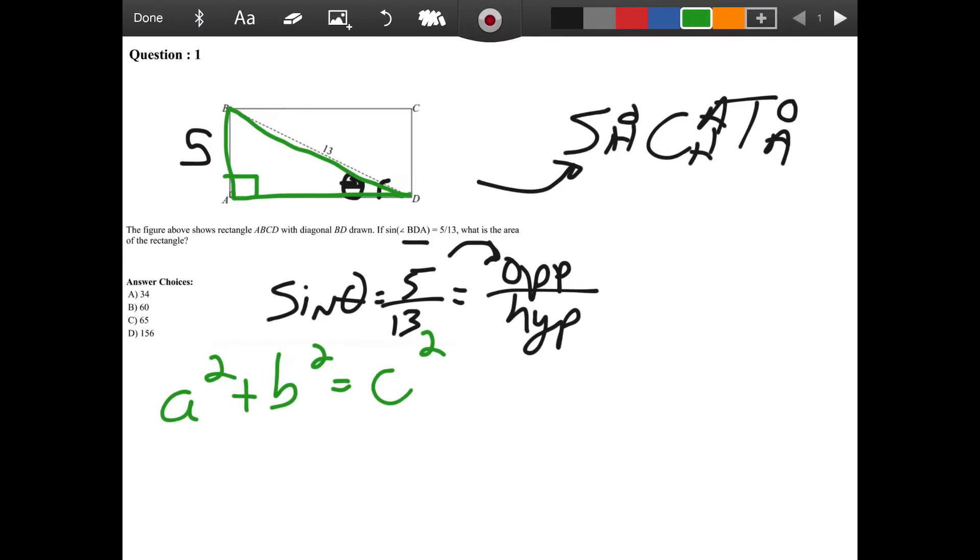And again, it's not asking for this side. Always be careful of what the question is asking. We want the area of this rectangle. But we'll do Pythagorean theorem, which is 5 squared plus B squared. And then the hypotenuse is 13 squared. So plug that in. I guess these are perfect squares. We don't really need to.